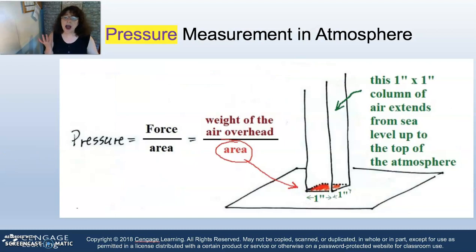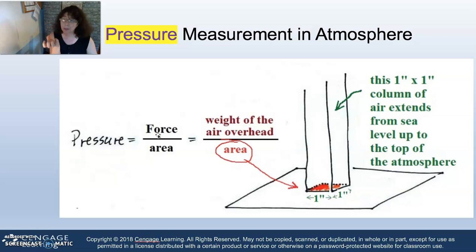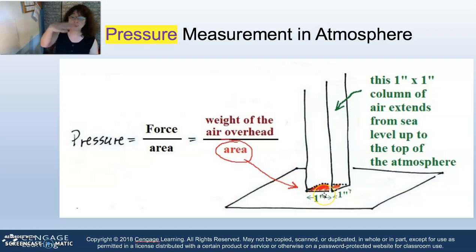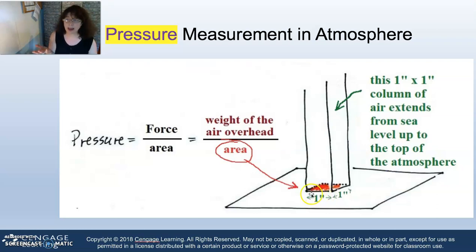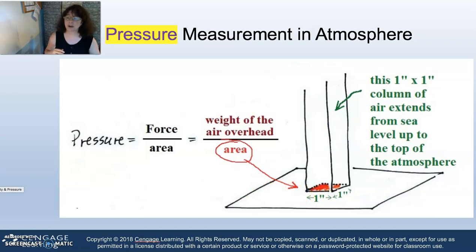To review: air pressure is force over area. Force is mass times gravitational acceleration over area. A 1-inch by 1-inch column from sea level up to the top of the atmosphere weighs about 14.7 pounds, known in metric as 1,000 millibars.